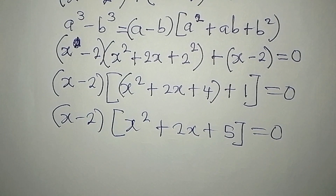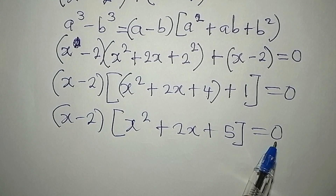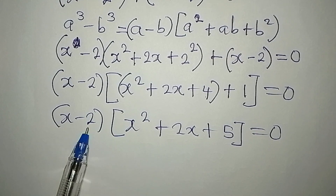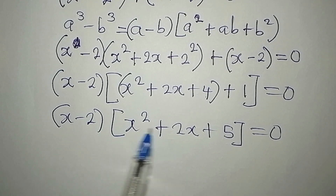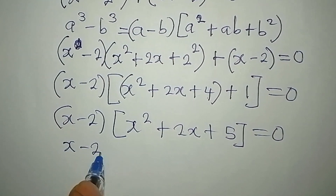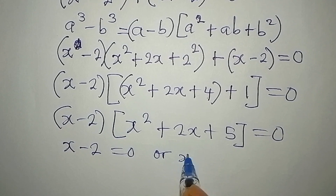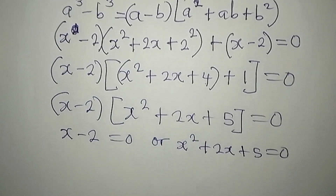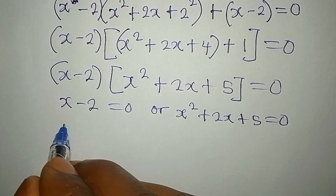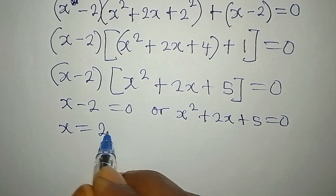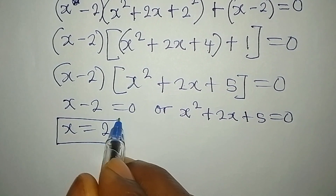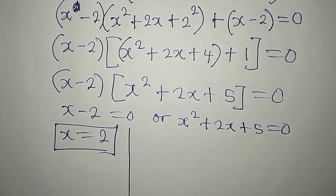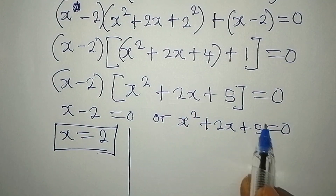We have two terms whose product is zero, so either or both of them equal zero. We're going to have x minus 2 equal to zero, or x squared plus 2x plus 5 equals zero. From the first: x equals 2. That is the first and real solution to the problem. From the second we can get two additional solutions — this is a quadratic equation.